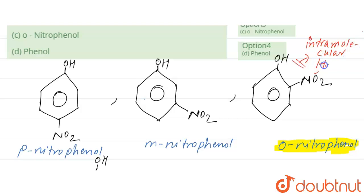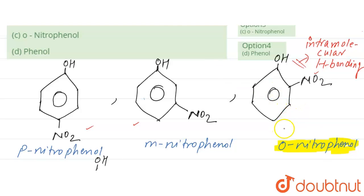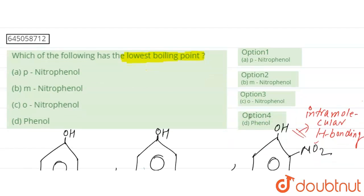In meta-nitrophenol and para-nitrophenol, intermolecular hydrogen bonding is present — different molecules form hydrogen bonds with each other. But in ortho-nitrophenol, intramolecular hydrogen bonding occurs within the same molecule, so it will have the lowest boiling point.